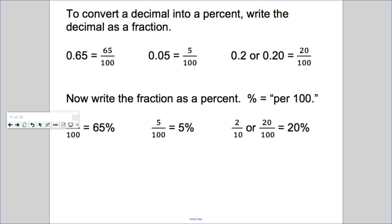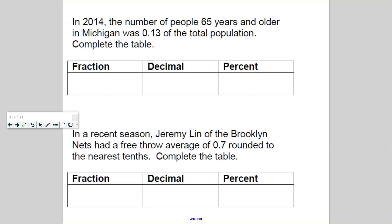After that, we are going to be just practicing some questions during class. If someone in Michigan, the number of people 65 and older are 13/100 of the population, how would you write that as a fraction? Well, this is 13/100. And what percent is that? 13%.